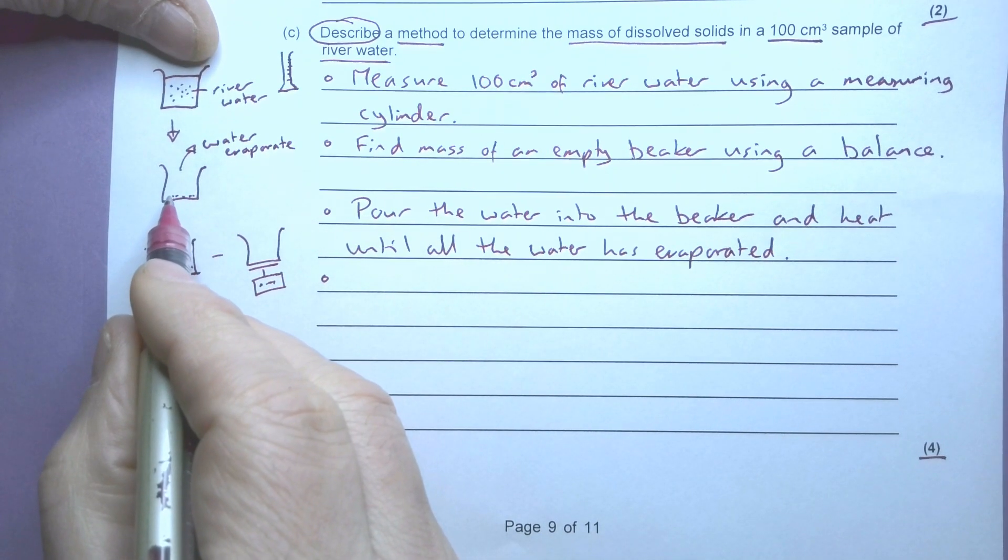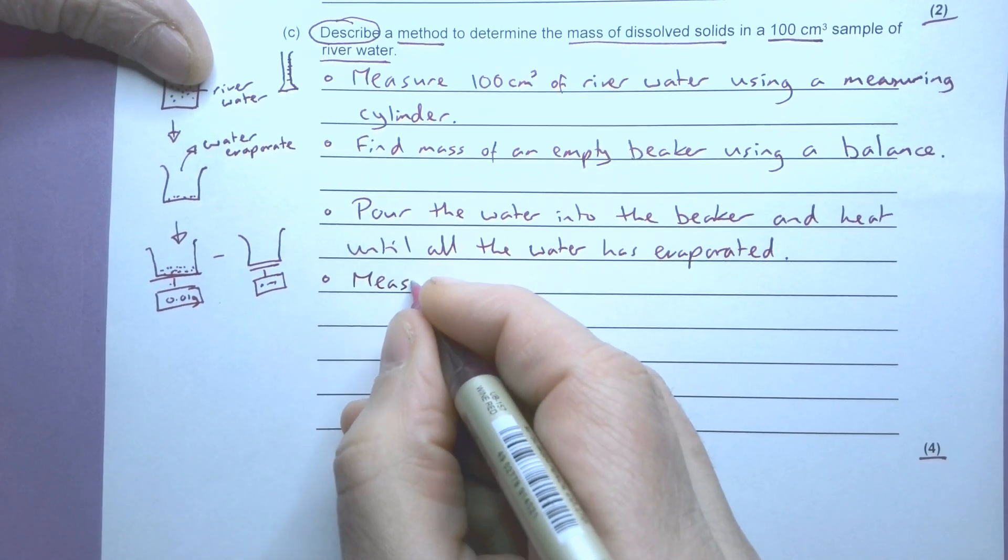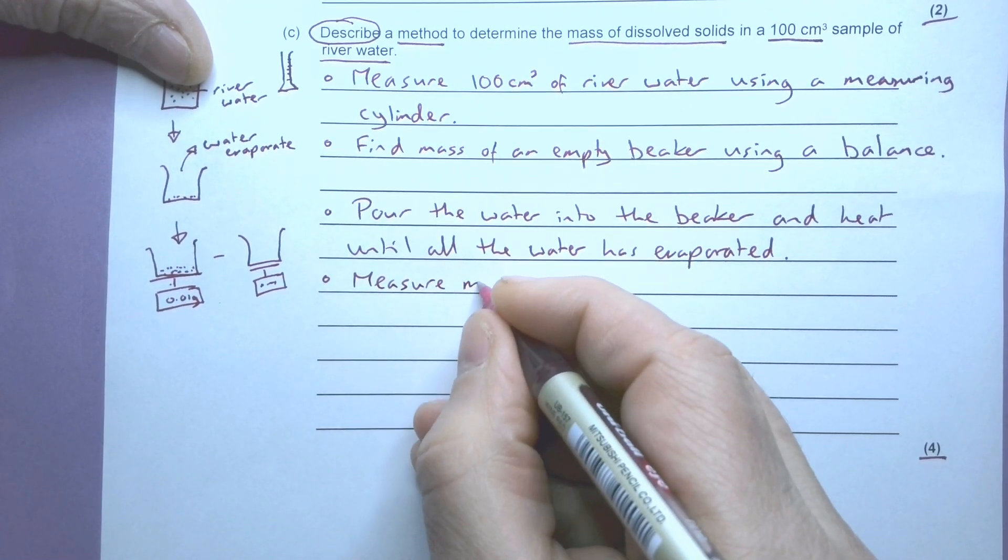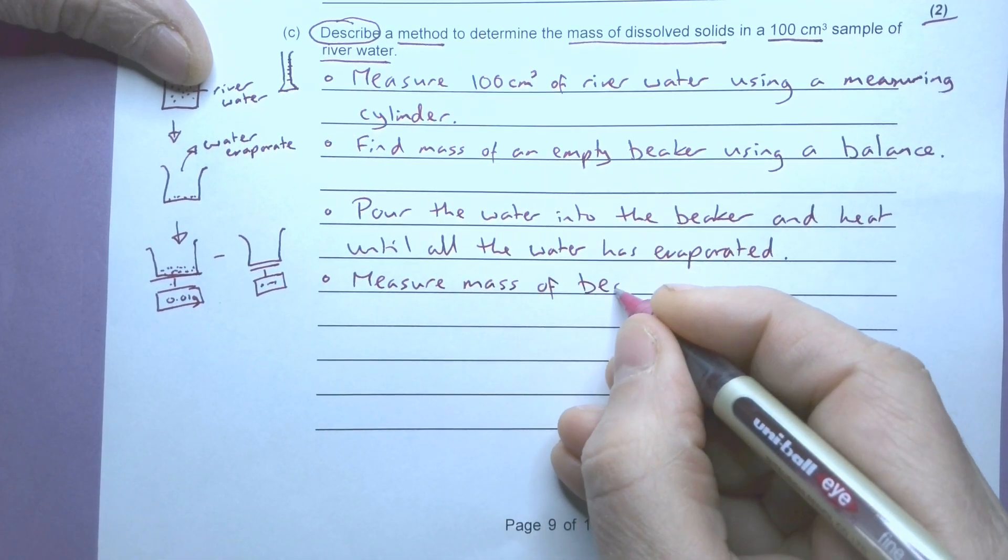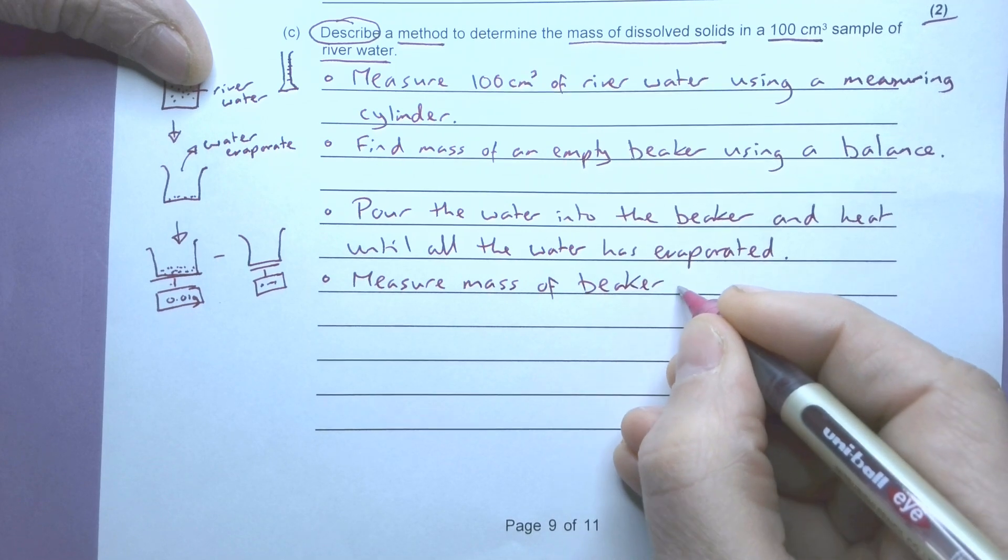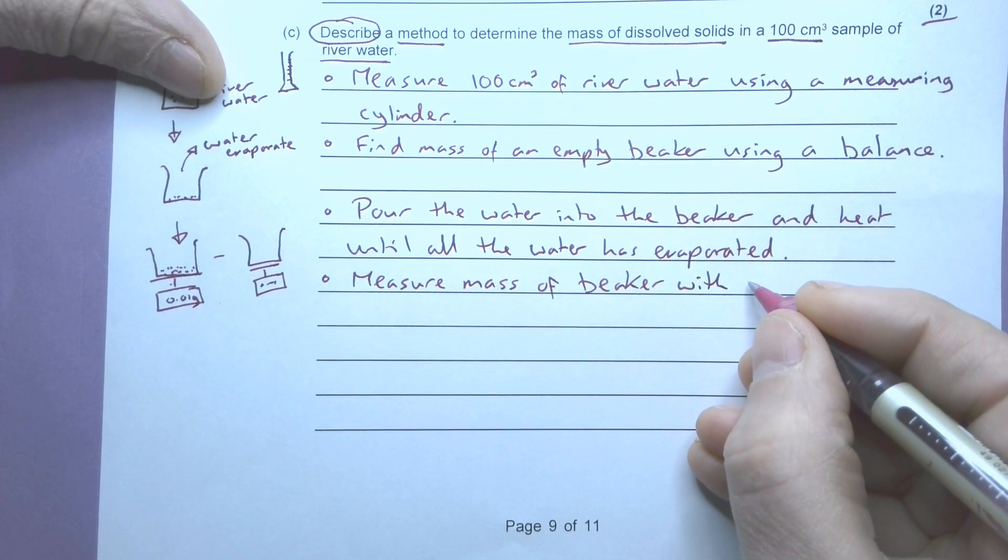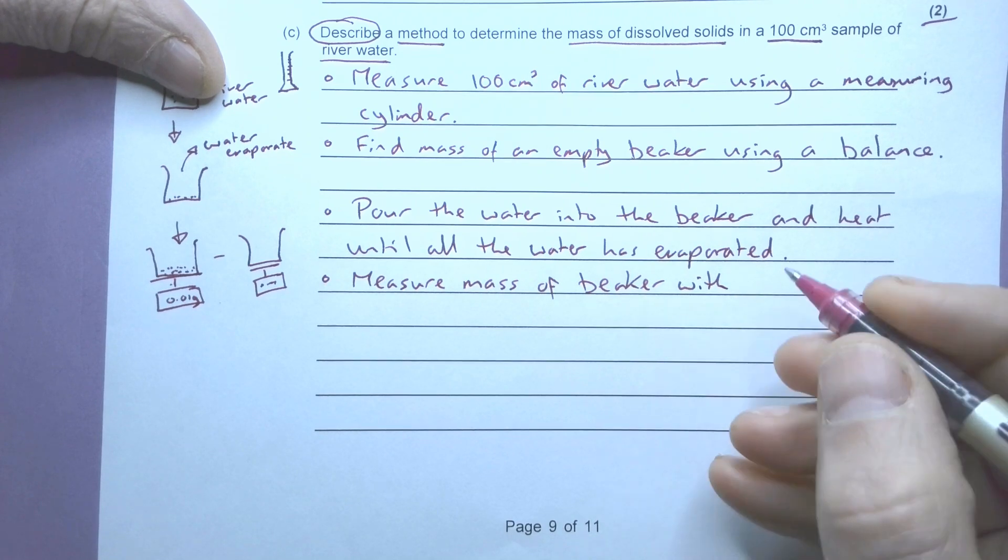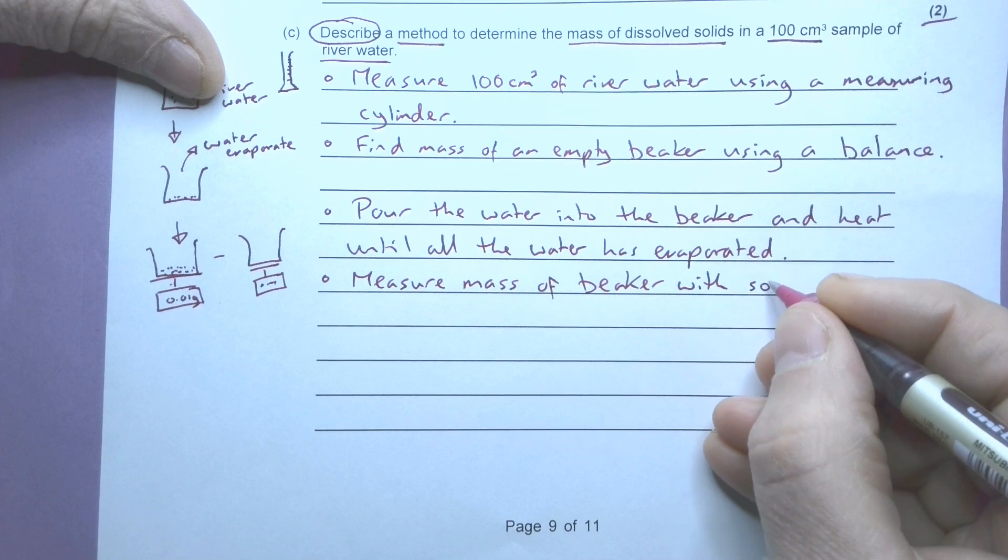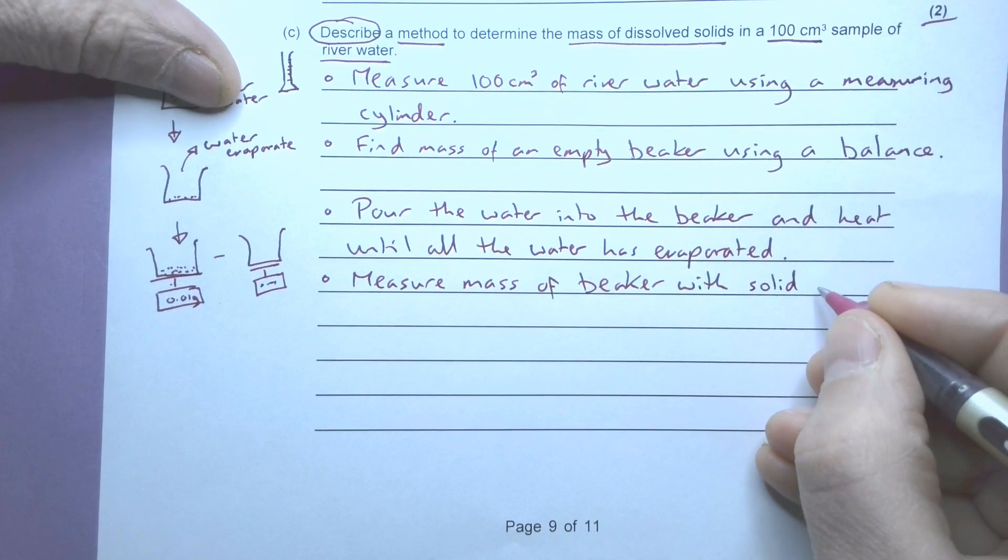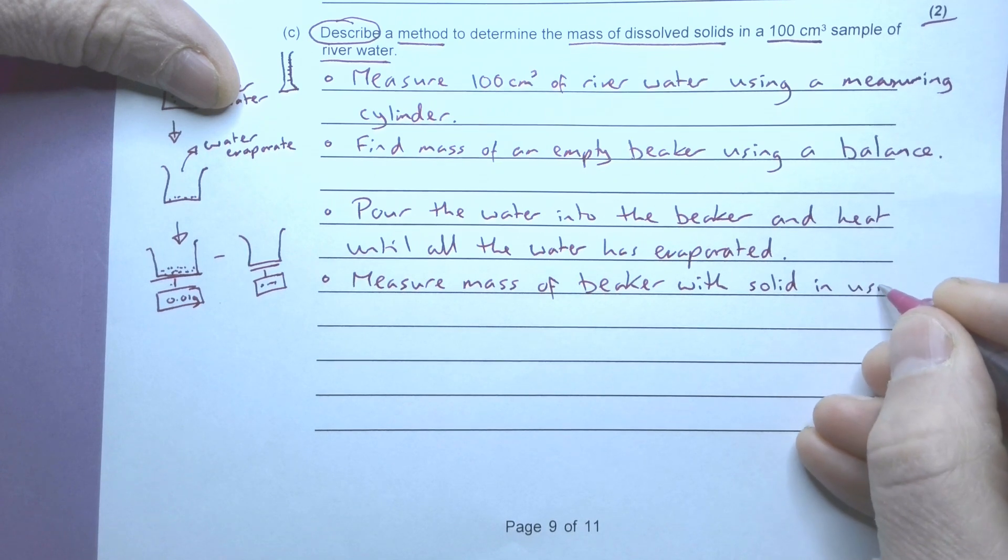Now I need to find the mass. So I'm going to measure mass of beaker with - so we call them the solutes - okay, with the solid in, using balance.